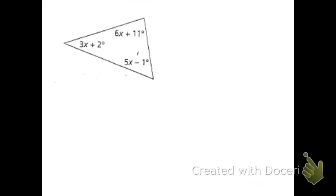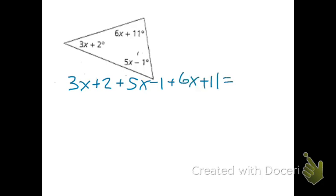In this question, we're given the three angles as expressions and we want to figure out what X is. Although this could be an equilateral triangle, there's not enough information to assume that. Since it's just a triangle in general, all the angles add up to 180 degrees. So we take the three angles — 3X plus 2, 5X minus 1, and 6X plus 11 — add them together, and set them equal to 180.